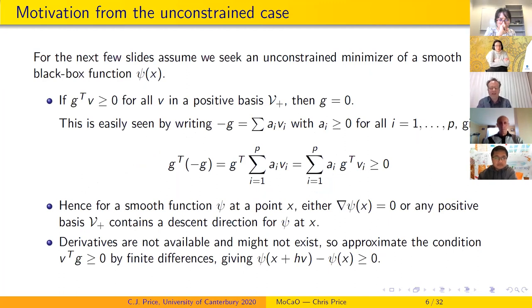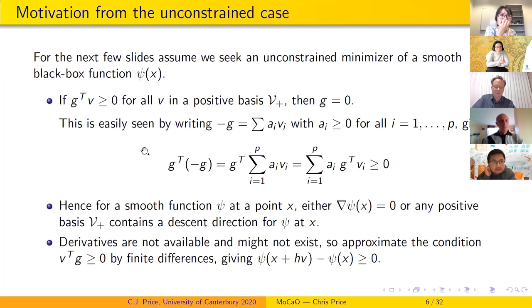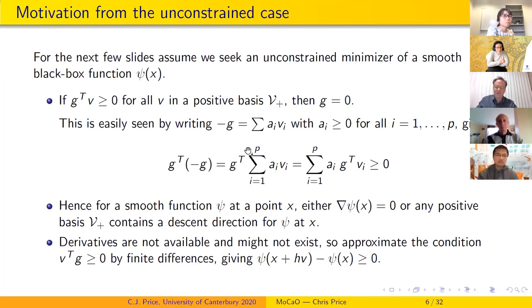I'll talk about unconstrained minimization first and how positive bases can be used in direct search methods that don't use gradient values to find local minimizers. This forms the basis for attacking the constrained problem. The key result: if you have some vector g where g^T·v is greater than or equal to zero for all vectors in a positive basis, then g must be the zero vector.